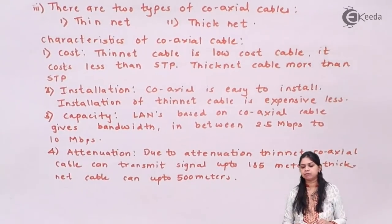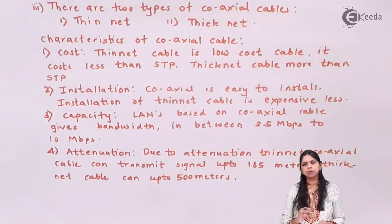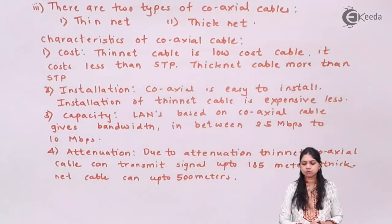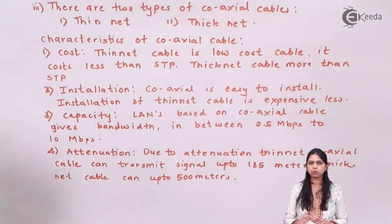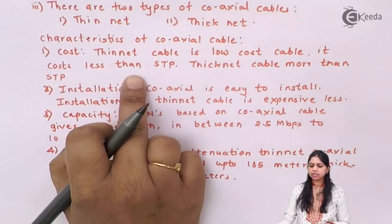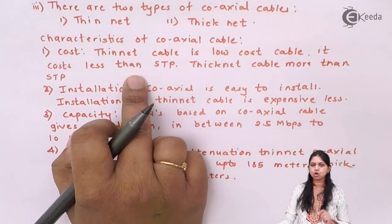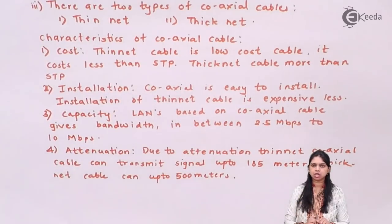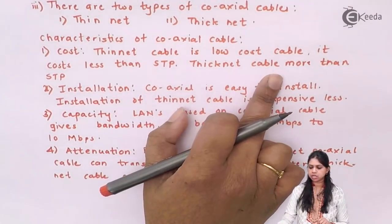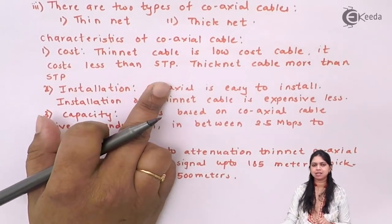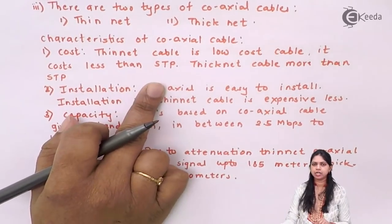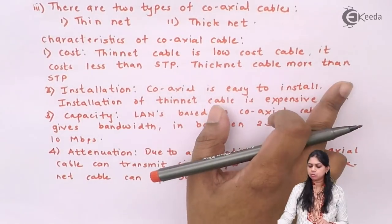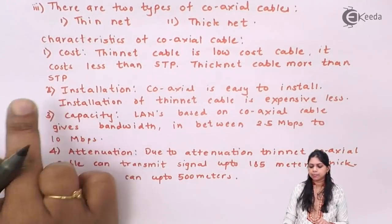Coaxial cable comes in two types: number one is called thin net and number two is called thick net. Regarding cost, thin net cable is a low cost cable — it costs less than even STP, which is your shielded twisted pair cable — whereas thick net cable costs more than STP.